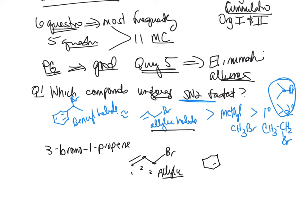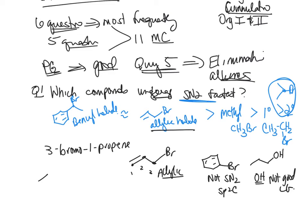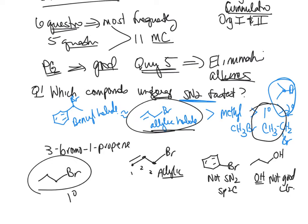The other answer choices for Q1 were: bromobenzene, which won't undergo SN2 because the carbon is sp2; 1-propanol, where OH is not a good leaving group so there's no SN2; and 1-bromopropane, a primary halide, which is slower than an allylic because allylic benefits from resonance stabilization.